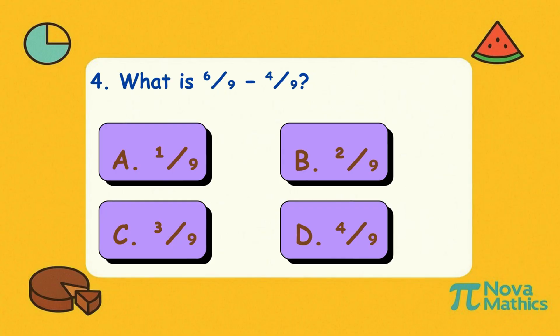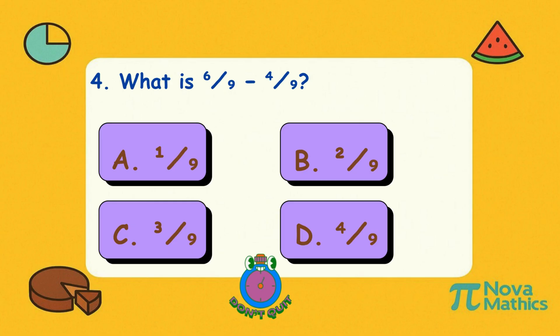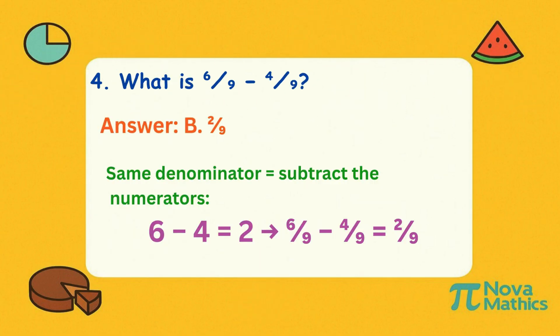Four. What is six-ninths minus four-ninths? Take away four from six — that's two on top. The bottom stays the same. The answer is two-ninths.